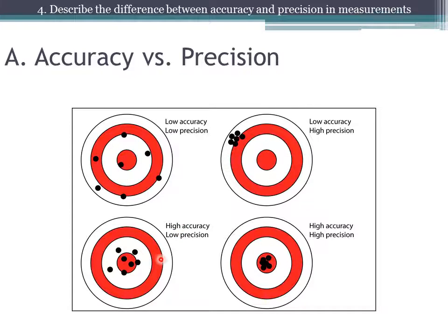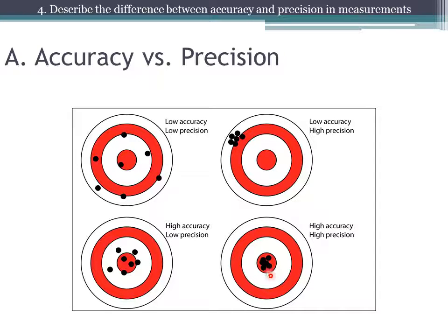Likewise, if you hit the bullseye often or are very close to the bullseye often, then you have high accuracy. But if you are not hitting the target in the same place, then you have low precision. And if you are hitting the bullseye often and in the same place or very nearly the same place, then you are both accurate and precise.